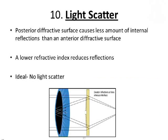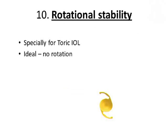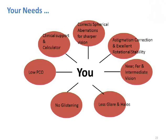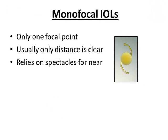The ideal IOL should not cause any glare or halos and should also provide good depth of field. The posterior diffractive surface of the IOL causes less light scatter compared to the anterior diffractive surface, though ideally there should not be any light scatter. Rotational stability is of utmost importance, and there should be no PCO after cataract surgery. So what we need is an intraocular lens that corrects spherical and chromatic aberrations, corrects astigmatism, has good rotational stability, and provides excellent vision for all distances without any glare, halos, or glistening. However, no such intraocular lens is available at present.